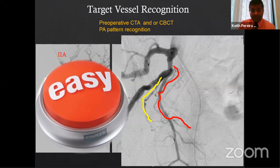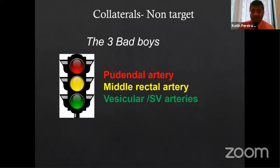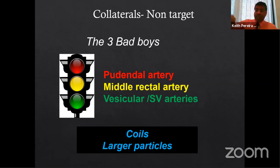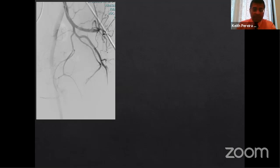Collaterals — the three 'bad boys' — are the pudendal, middle rectal, and vesical arteries. The vesical artery is important but not critically dangerous; the middle rectal is important but manageable; the pudendal is extremely important — you absolutely do not want a single case of penile ulcers from non-target embolization, and they can happen. They're self-limiting but painful, and patients will call you constantly. How to deal with collaterals: use coils and large particles. For pudendal communications, almost always coil them.